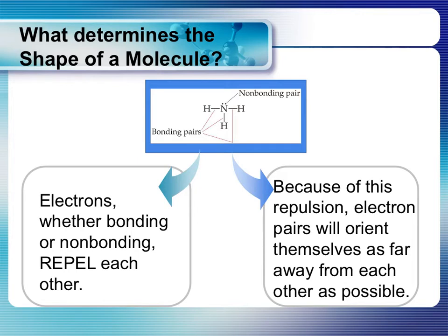What determines the shape of a molecule are all of the valence electrons around the central atom. Whether they be lone pairs or bonding electrons, we know that electrons have a negative charge and therefore they repel one another. Because of that repulsion, the valence electrons try to get as far away from each other as possible. So basically what we're going to be doing is counting how many electron groups or areas we have around the central atom and determining the shape they will assume to get as far away from each other as possible.